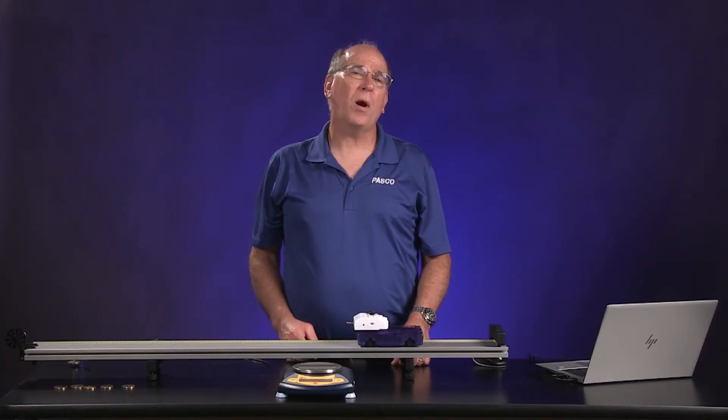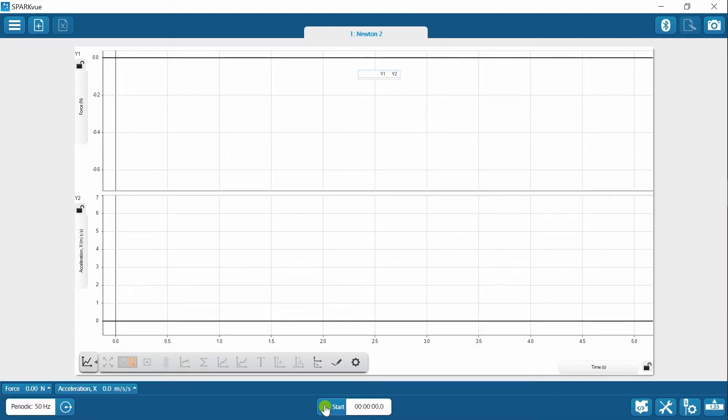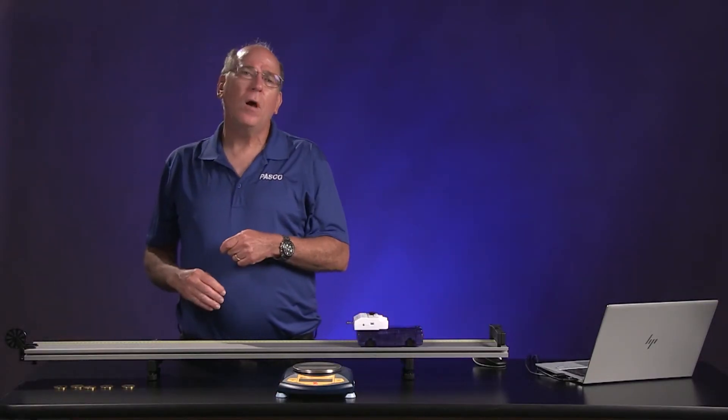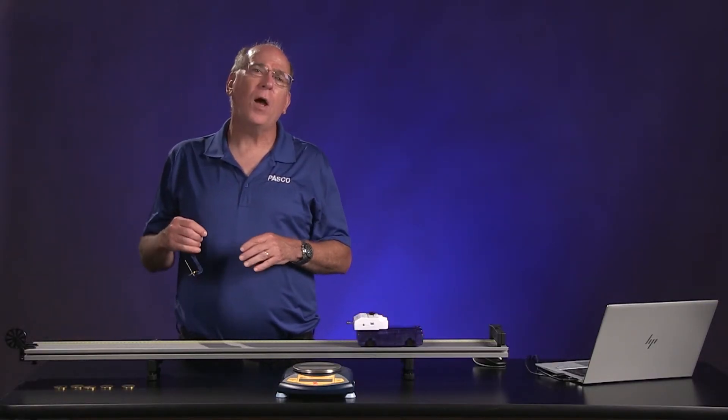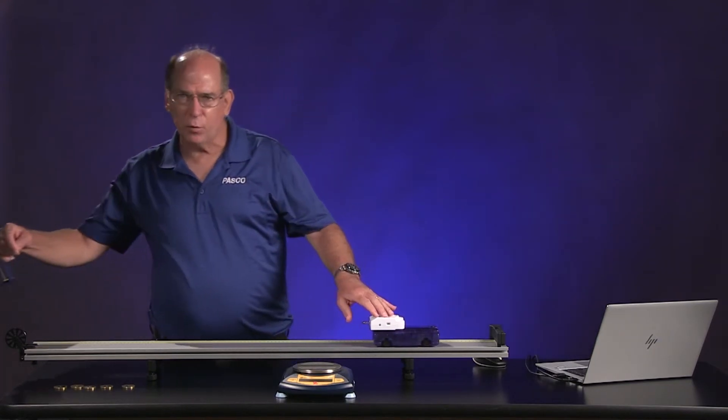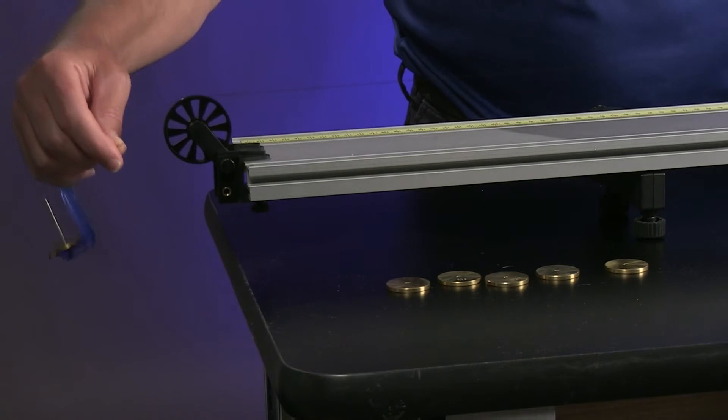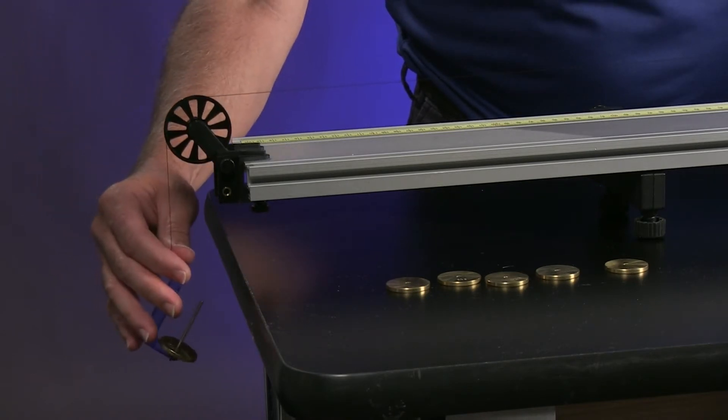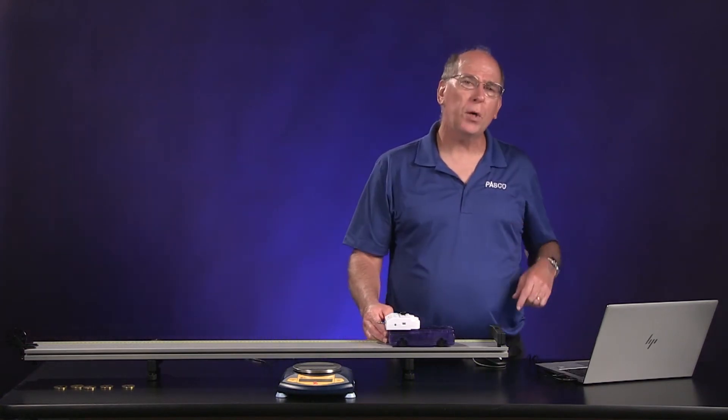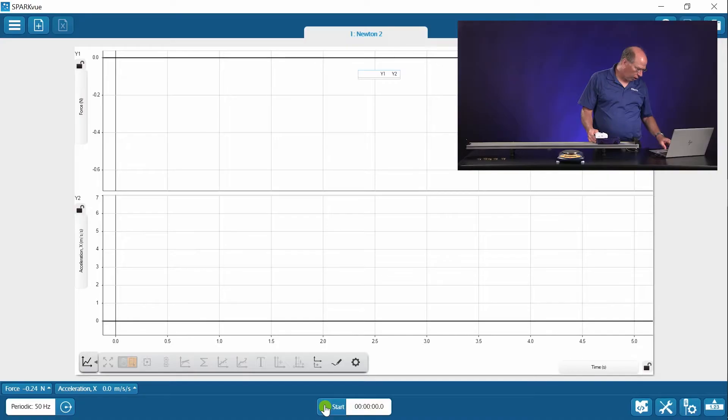We've configured the SparkView software to display a graph of force versus time and acceleration versus time. There's a 20-gram mass on the 5-gram hanger tied to the end of the string for the first trial. After we make sure the weight isn't swinging and the string is over the pulley, we can start recording data and then release the cart.